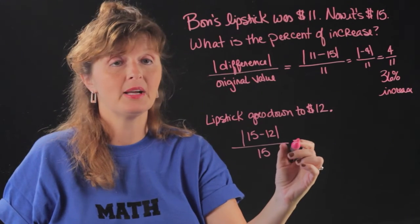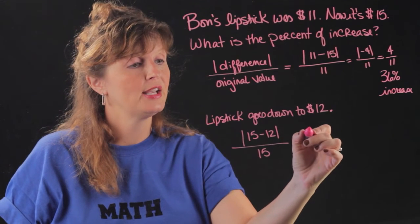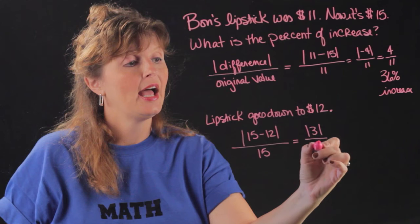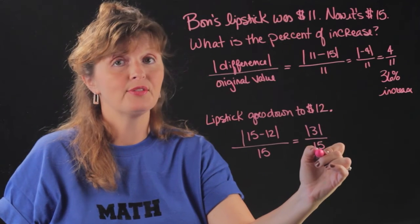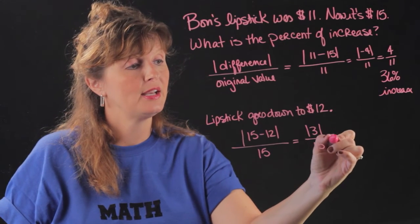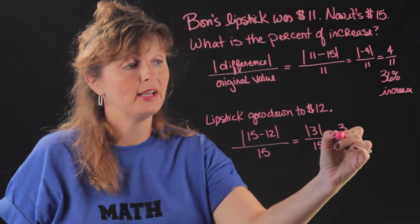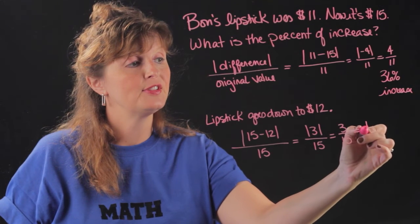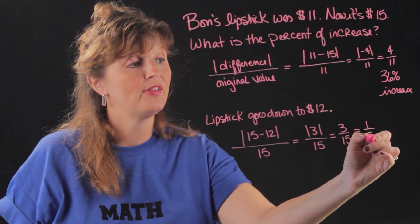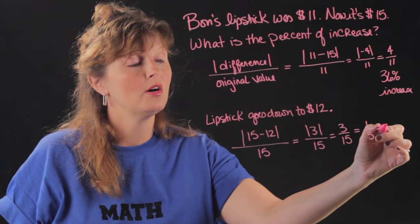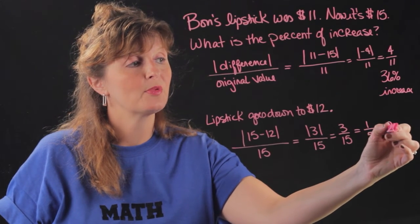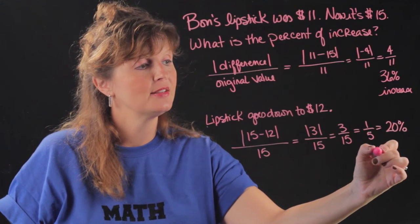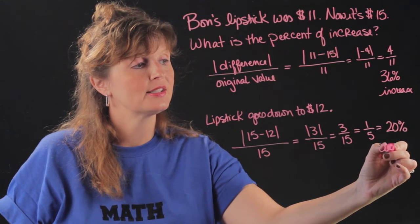So 15 minus 12 is 3. The absolute value of 3 is still 3. And 3 over 15 is one fifth, or 20%. So we have a 20% decrease.